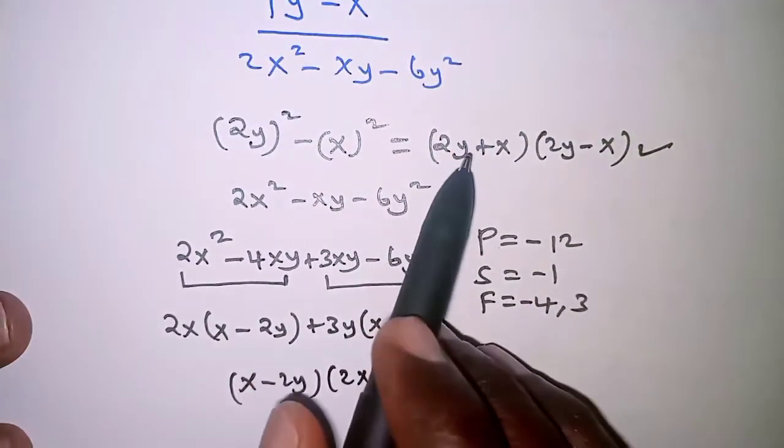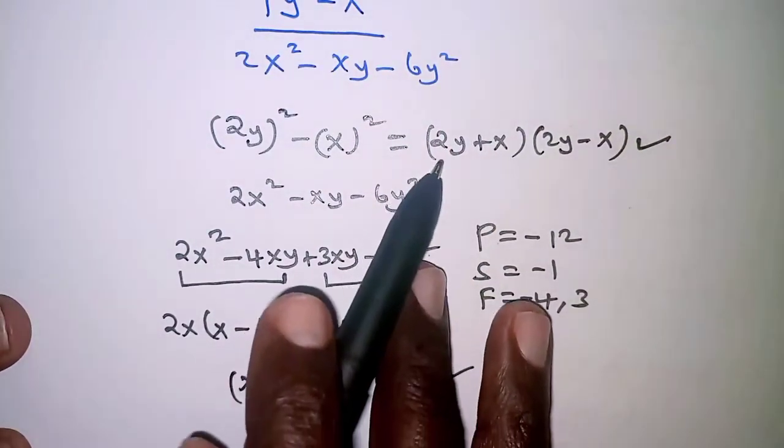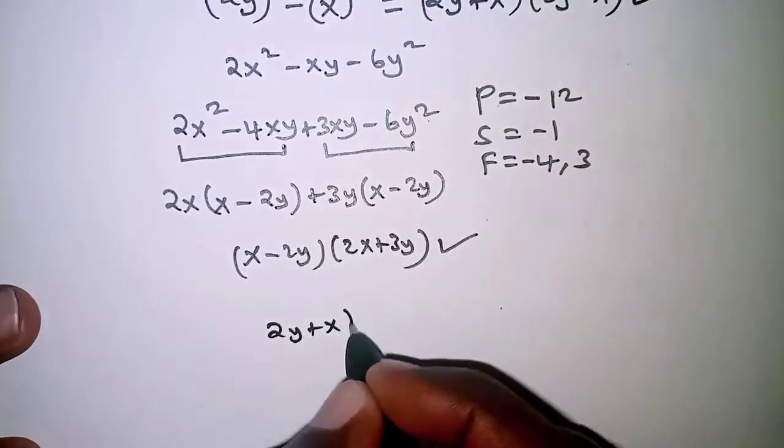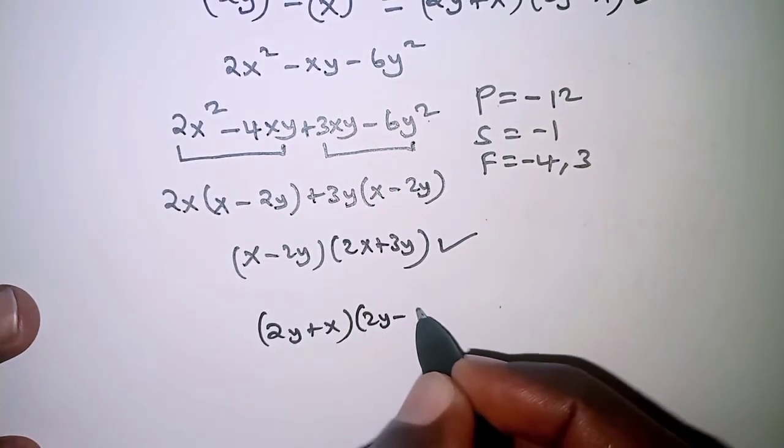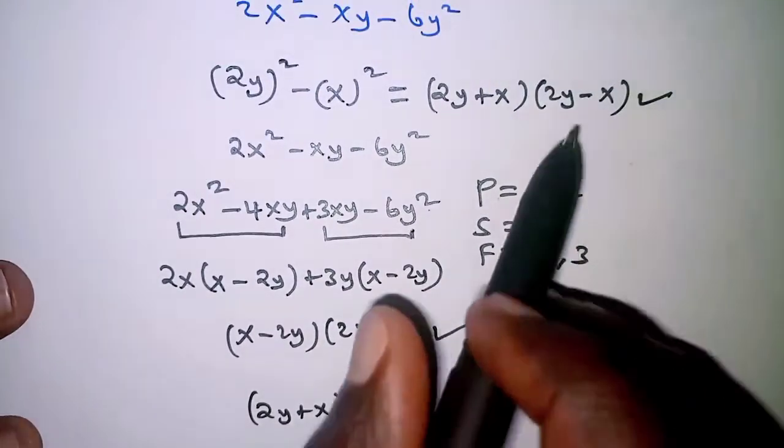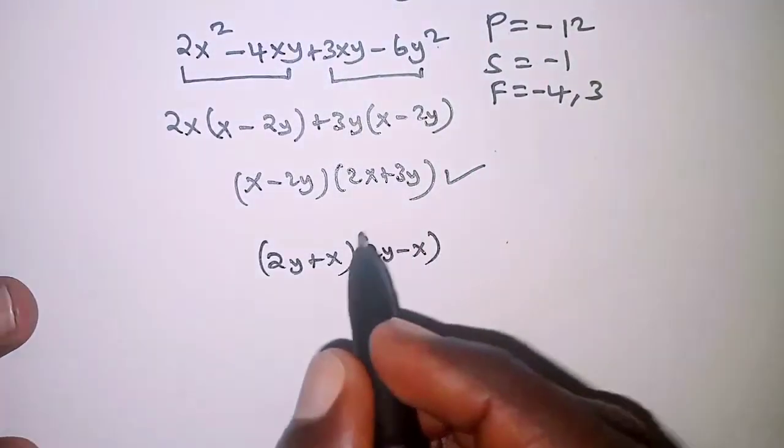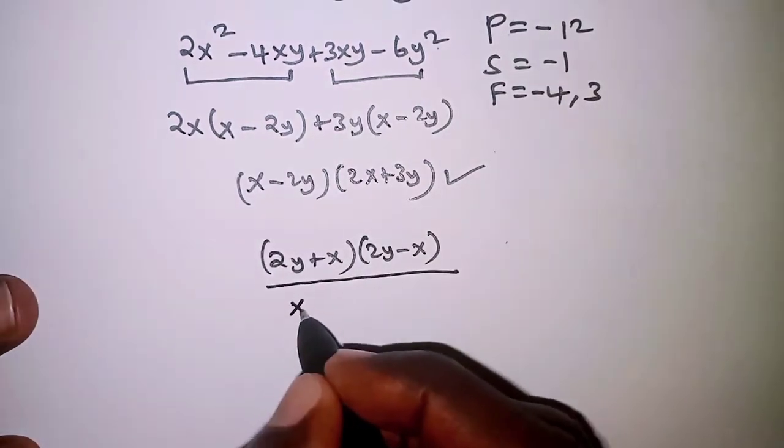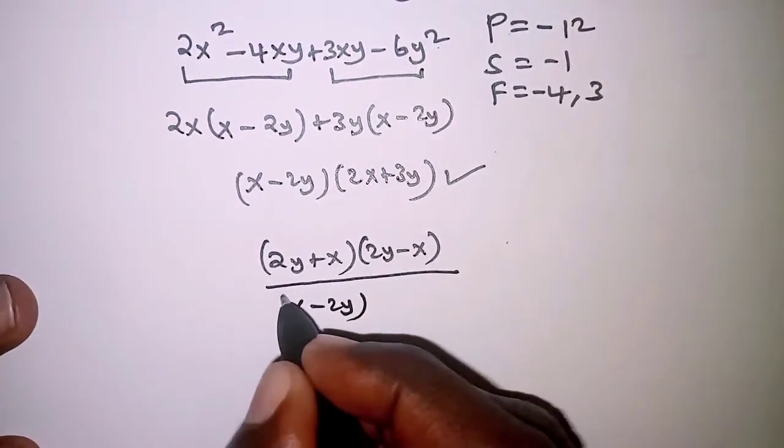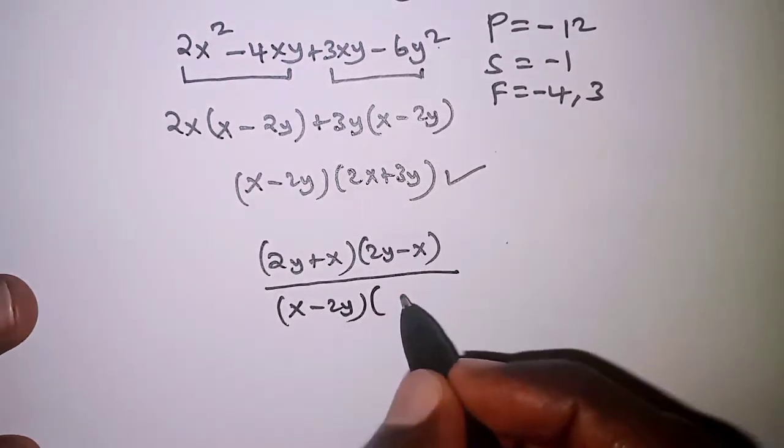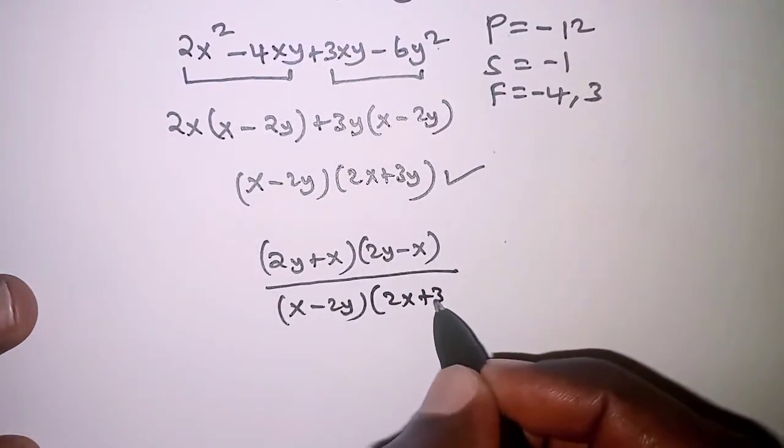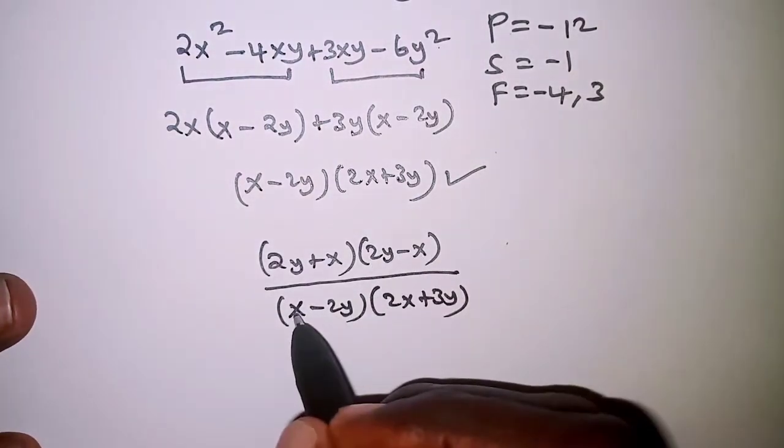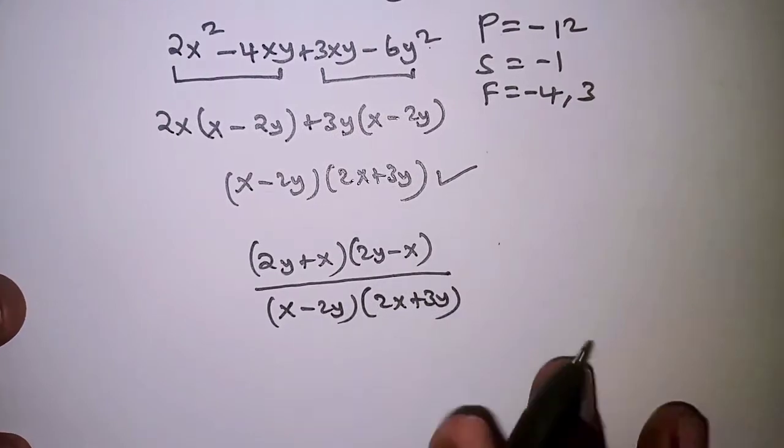Now, bringing the numerator over the denominator: the numerator is (2y + x)(2y - x), and we divide that by the denominator (x - 2y)(2x + 3y).